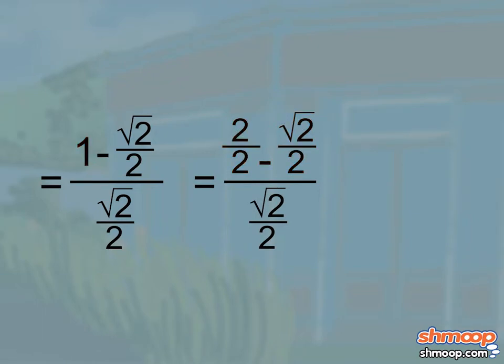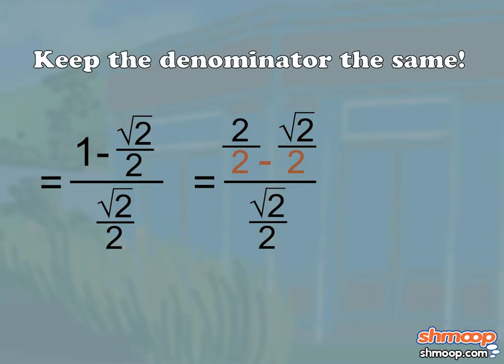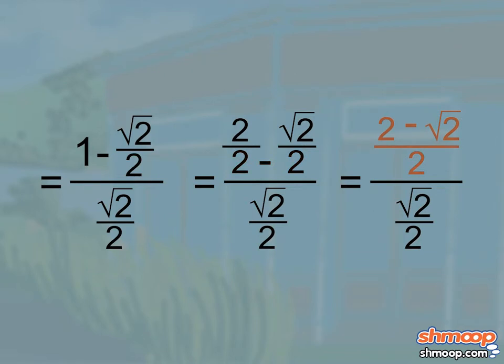We subtract fractions by subtracting across the numerator of the fractions and keeping the denominator the same. So we get two minus root two over two on the top of the bigger fraction. Got that?